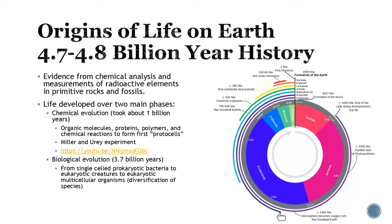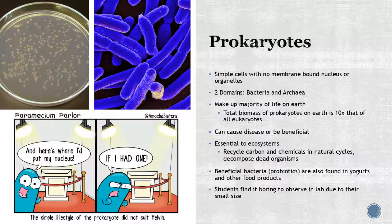With eukaryotes, we started seeing organisms that aren't dependent on the sun for energy. We got more and more diverse, eventually getting multicellular life. Eventually life left the waters, colonizing the planet — plants showed up first, then insects, and more and more specific organisms. Bacteria have been around a long time. They've figured it out. They've been here for billions of years and they know what they're doing.